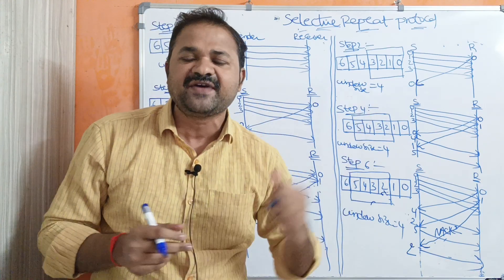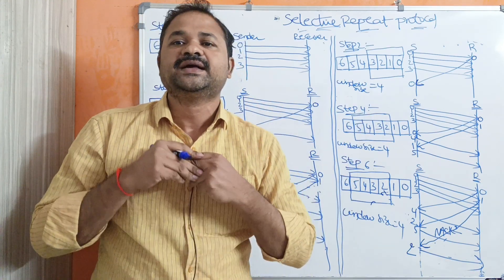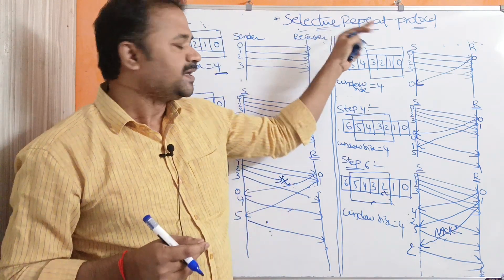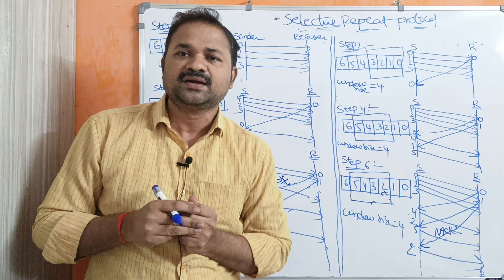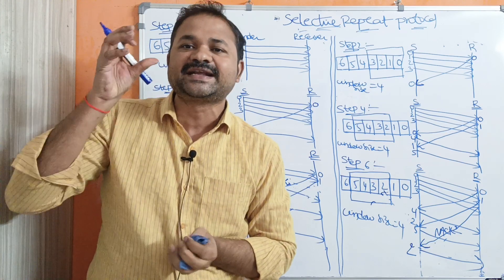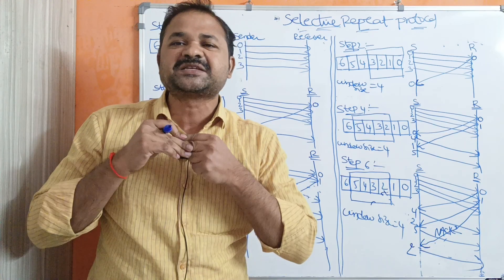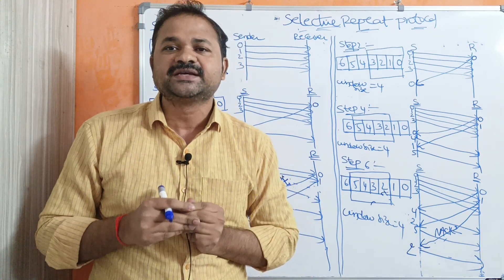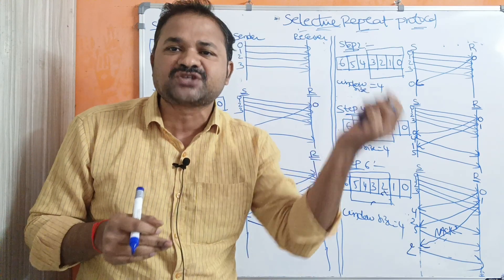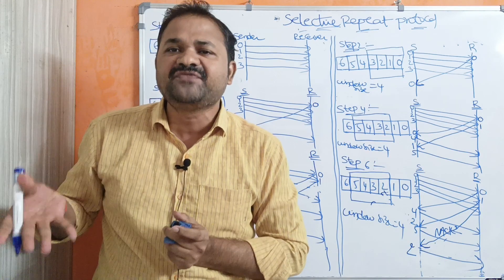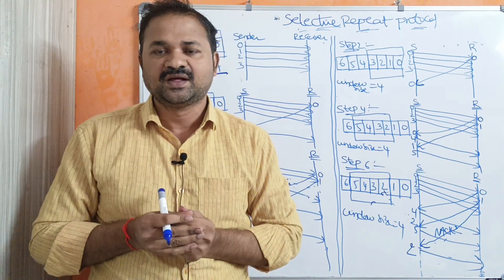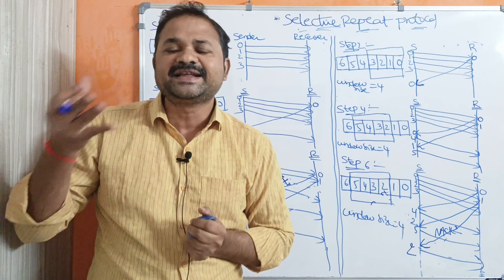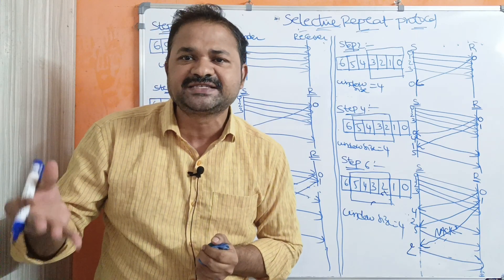That is the major advantage of the Selective Repeat Protocol. Here in Selective Repeat Protocol, the sender and receiver window size must be the same. So if the sender window size is 2, then the receiver window size is also 2. Likewise, if the sender window size is 4, then the receiver window size is also 4.